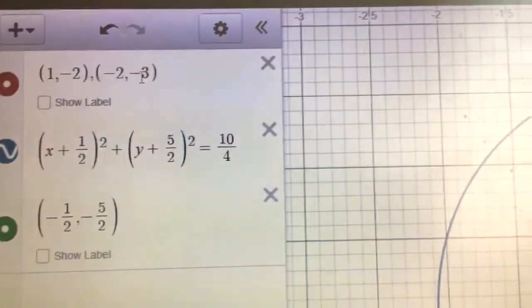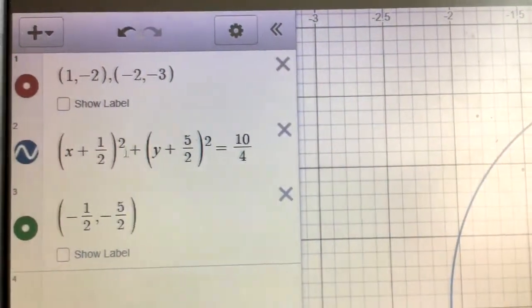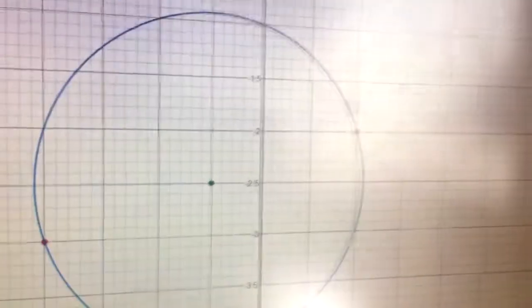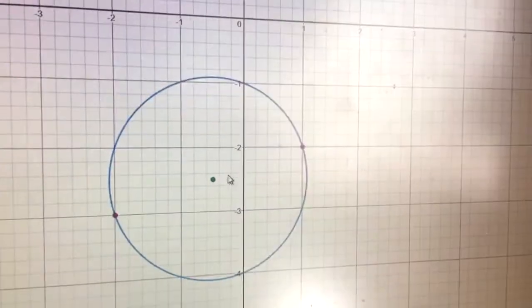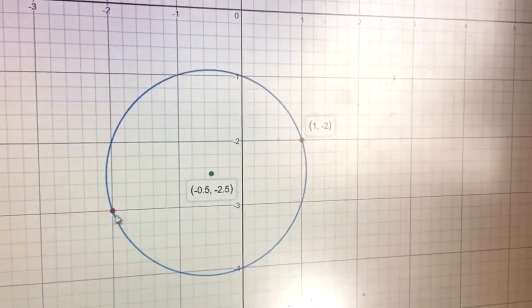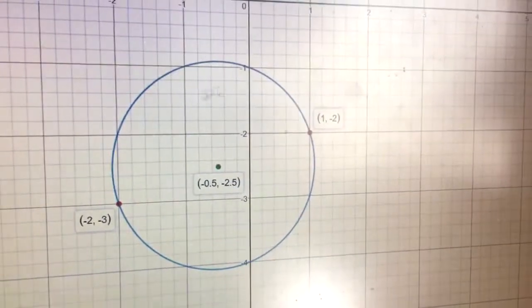And here's a connection graphically. The red points are the endpoints. The blue circle is the equation that we solved for, and the green is the center of the circle. You can see that it actually makes a circle. Green is in the center, our two endpoints are here and here, and you can see the equation of the circle models that circle.